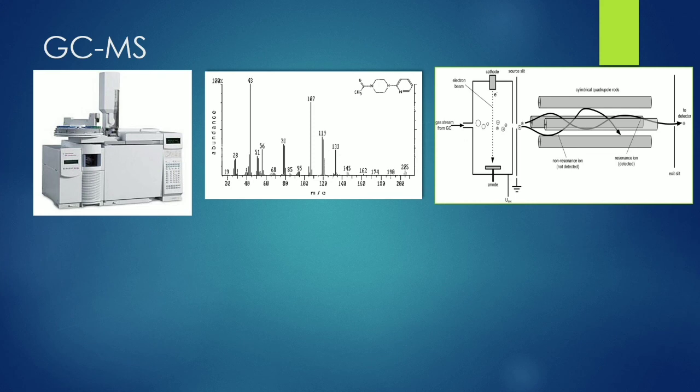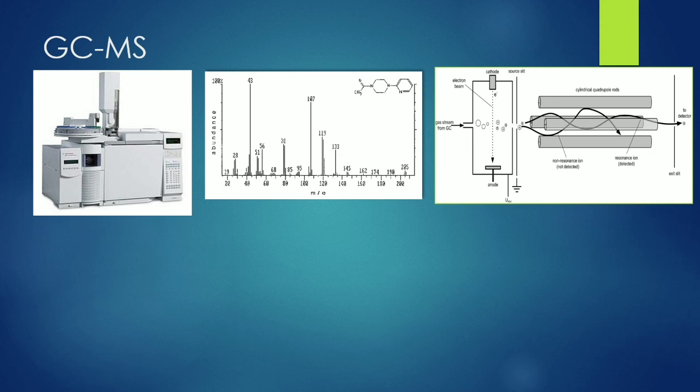Why does this spectrum look like this? Because in a GCMS spectrum we are using a technology called electron impact ionization. In electron impact ionization, when you inject a material, the GC column will separate your analyte based on polarity and then it will enter into your MS. In the MS it comes into a chamber having fast-moving electrons. These fast-moving electrons are formed using a cathode and anode placed on opposite sides with a very high potential difference.